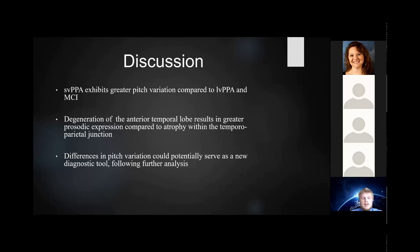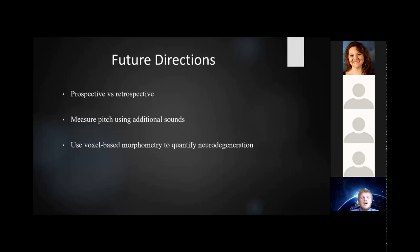In conclusion, semantic patients exhibited increased pitch variation compared to logopenic patients and MCI patients. Degeneration is associated with the anterior temporal lobe, and degeneration in that area may result in greater prosodic expression compared to atrophy within the temporal parietal junction. These differences could serve as a new diagnostic screen following further analysis. Our study was retrospective and in the future we'd like to run a prospective study so we could control for more variables. We would also like to use voxel based morphometry to quantify neurodegeneration and associate that with pitch variation.